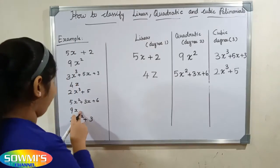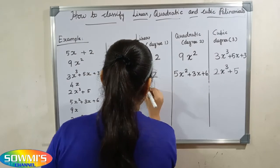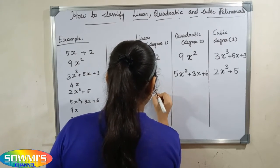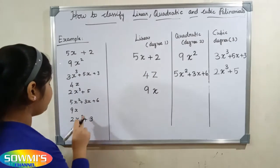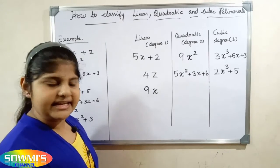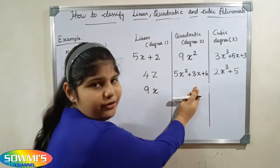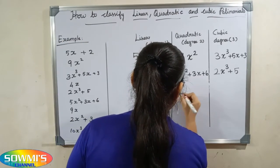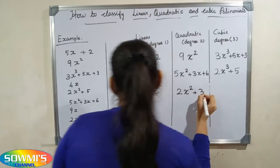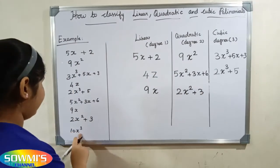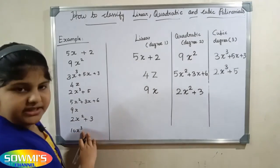9x — here the degree is 1, so this is a linear polynomial. 2x squared plus 3 — here the degree is 2, so this is a quadratic polynomial.